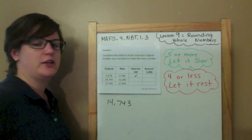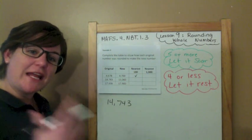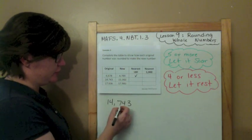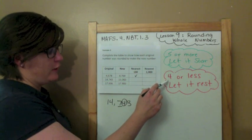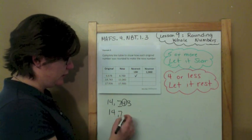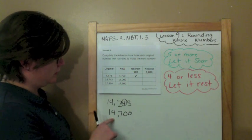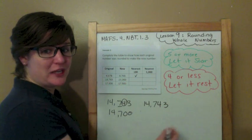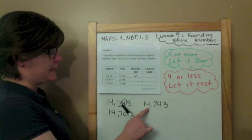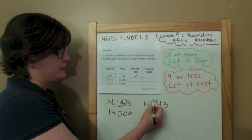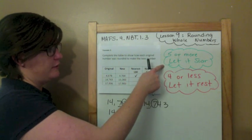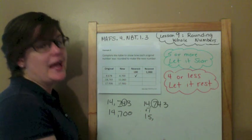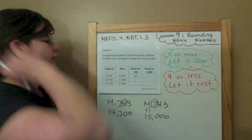Next: 14,743. Let's round it to the nearest hundred and then to the nearest thousand to see which gives us 15,000. Nearest hundreds: spotlight to the right — four or less, you better let it rest. Bring these digits down, everything else becomes zeros. That's not what we needed. We needed 15,000, so let's try rounding to the nearest thousand. The four is in the thousands place. Spotlight to the right — seven is five or more, let it soar! Four plus one is five, bring the one down. Everything else becomes zeros — which is exactly what we needed.